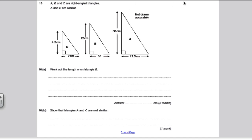It tells us that A, B and C are right angle triangles and only A and B are similar. If A and B are similar, just be careful, they haven't put them in alphabetical order, it's an easy mistake to make. It asks us to work out the length W of triangle B. A similar shape means all the angles are the same and the lengths are related by a scale factor. Let's find that scale factor.